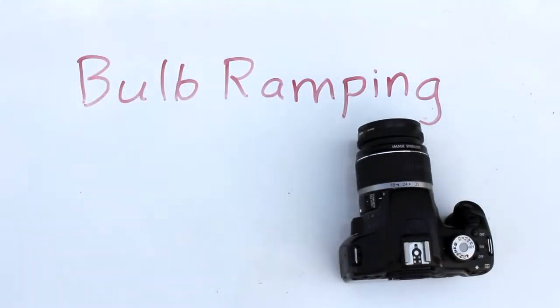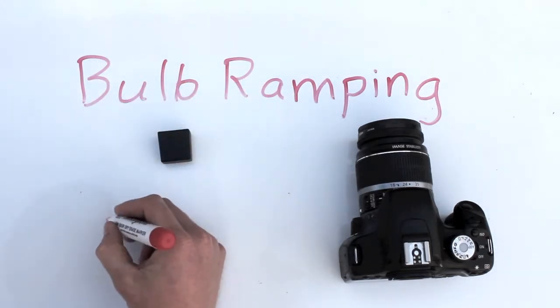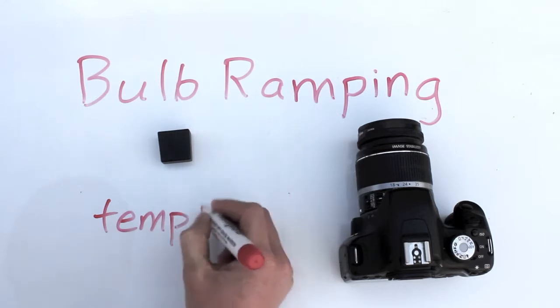Conceptually, taking a bulb ramp is straightforward. Micron needs to adjust the exposure of your images at the same rate that light levels are changing, usually during a sunset or a sunrise.